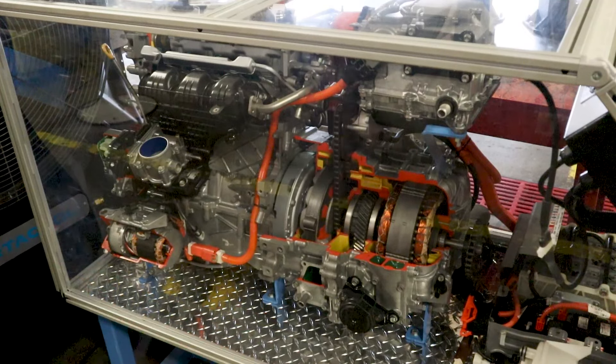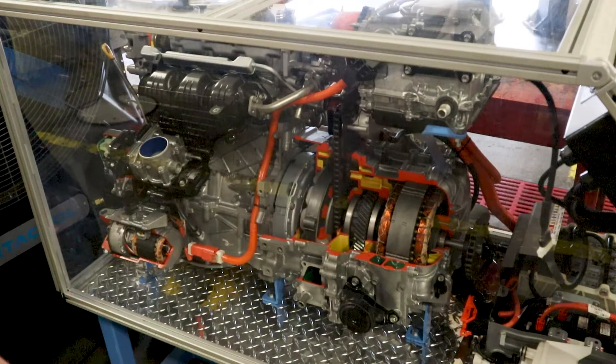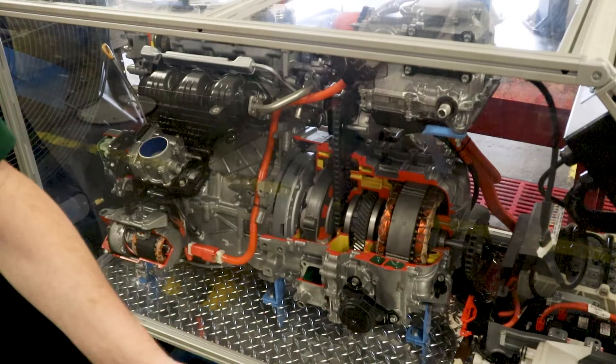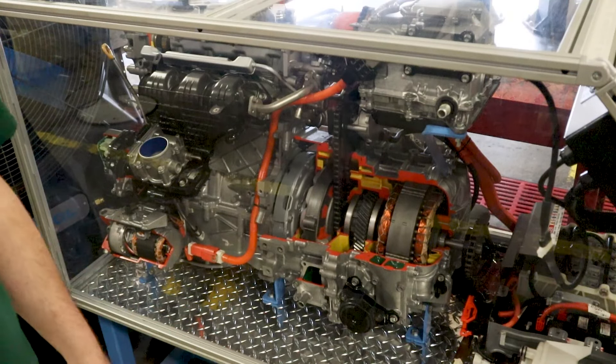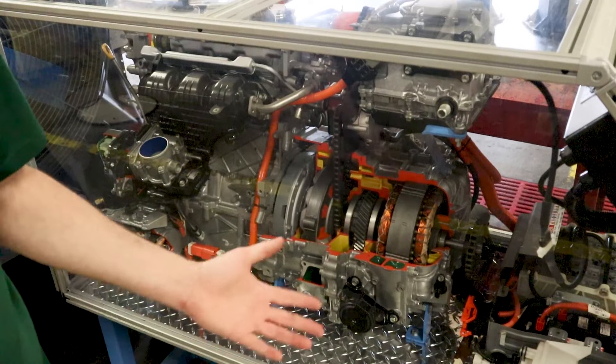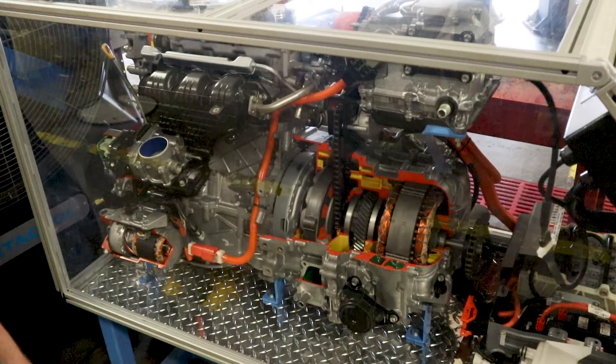And also, regen does not work in an ABS event. So just keep that in mind moving forward that the majority of the braking done just in normal, everyday driving is done by the regen. And this is why the brake pads last so long, because they're not being used as much as would be on a normal car.